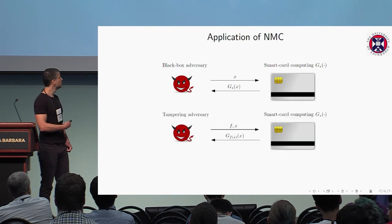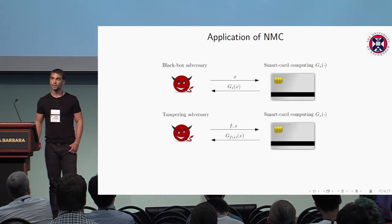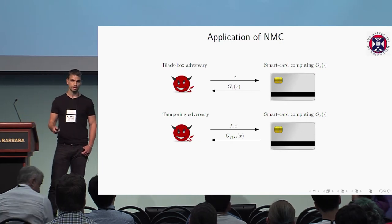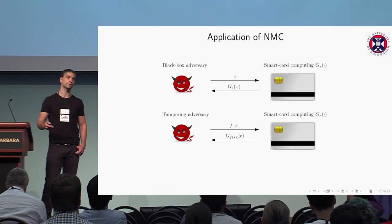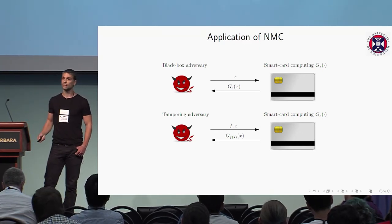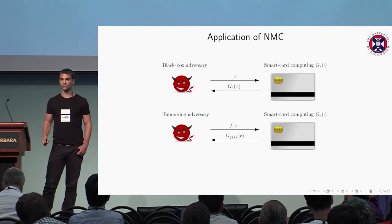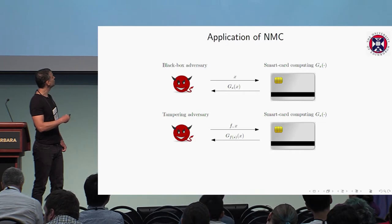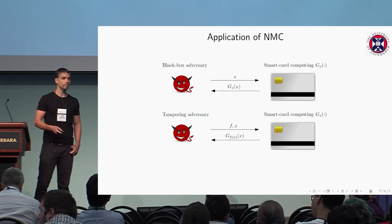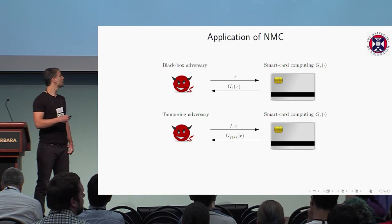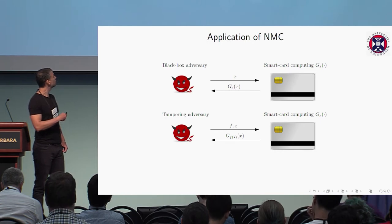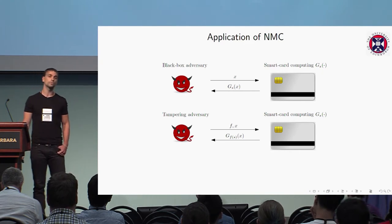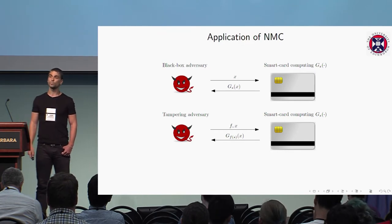In reality, the adversary can be much more powerful because he can exploit physical properties of the implementation and mount what we call physical attacks. One way to model them is considering attacks against the memory of the cryptographic hardware. The adversary gives input X to the functionality, issues a tampering query F, and receives the output G over X but evaluated over the tampered memory value F of S. The main goal is to infer information over the private state or compute things he wouldn't be allowed to compute without tampering.